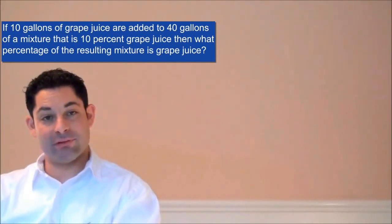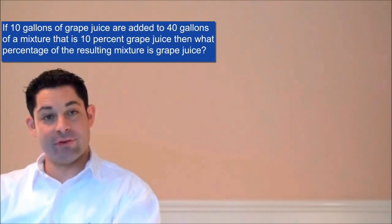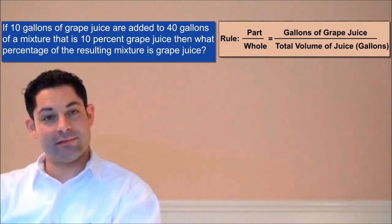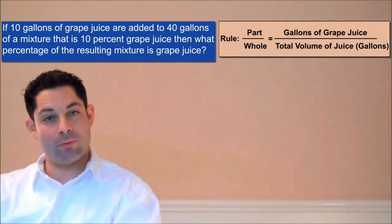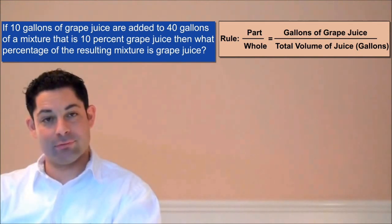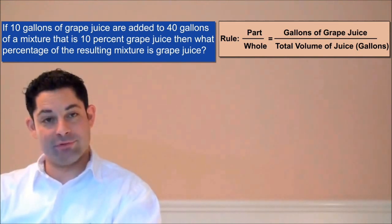There are two steps to solving mixing problems. The first step is to determine how much of each item we actually have. The second step is to determine the ratio part over whole. What we're really interested in computing is the ratio: gallons of grape juice over total volume of juice.